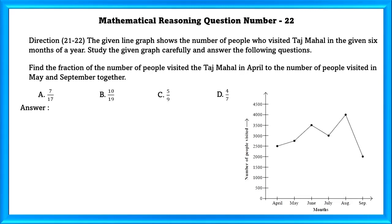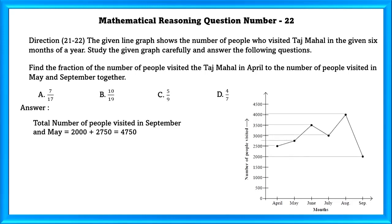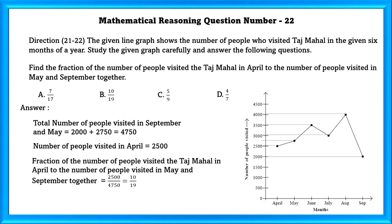Find the fraction of the number of people who visited the Taj Mahal in April to the number of people who visited in May and September together. May and September together gives 4750, and people who visited in April is 2500. So the fraction is 2500 by 4750, which equals 10 by 19.